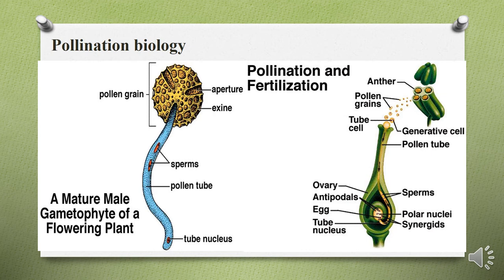In angiosperms, the dominant sporophytic generation produces spores that develop within flowers into male gametophytes — the pollen grains — and produces female gametes in an embryo sac. The pollen grain has an aperture, an opening from which the pollen tube emerges, and sperm travel through this pollen tube. The exine is the outer covering of the pollen that protects it from environmental stresses.